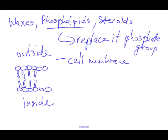Some other things to touch upon — waxes are lipid molecules used by plants and some animals as a waterproof coating. Waxes are waterproof, forming this waterproof coating as found in some types of fruits and the beeswax in a hive — the honeycombs of the hive are made up of these waxes.